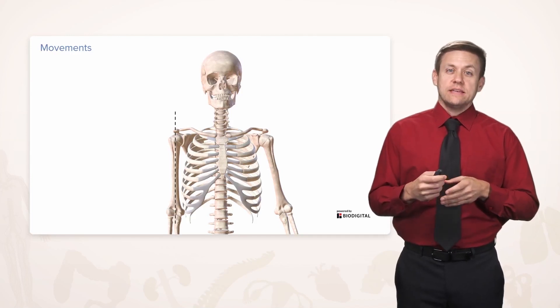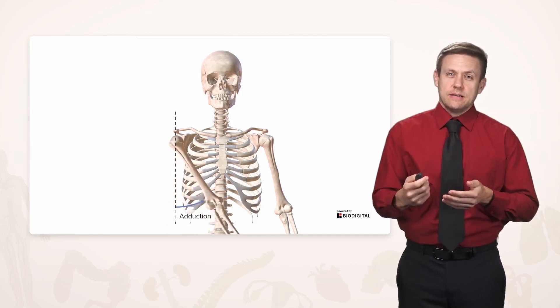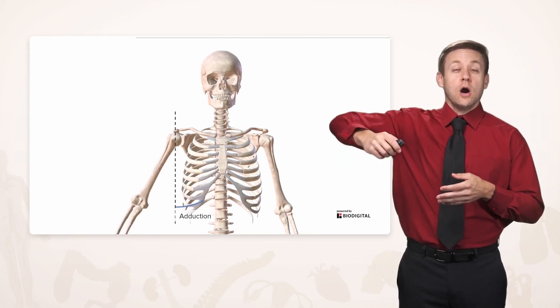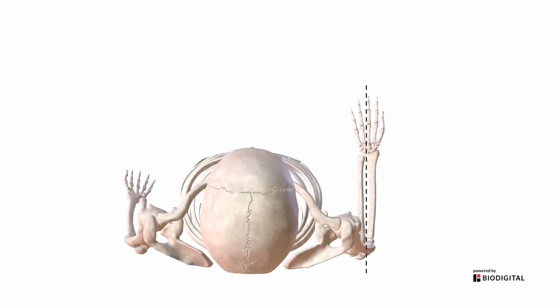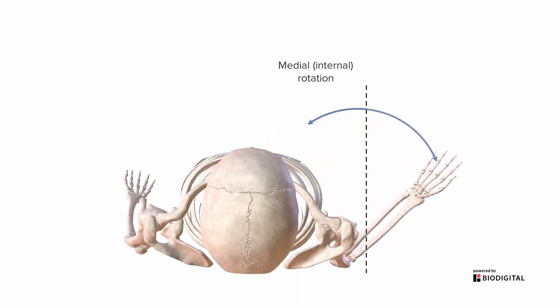Adduction is when, in this case, a limb is brought closer to the midline of the body. Abduction, on the other hand, is where it's swung away from the body. If we look down from a superior point of view, we can also see something called rotation, also at the shoulder joint. When we rotate a joint towards the body, we have medial or internal rotation. When we rotate a joint away from the body, we have lateral or external rotation.